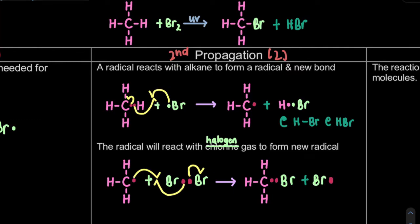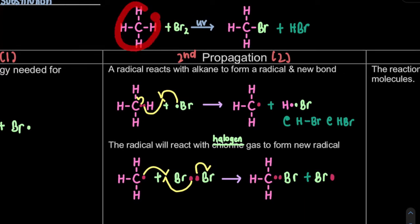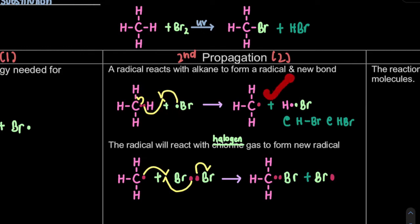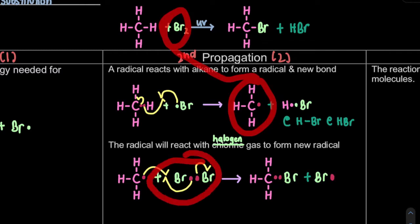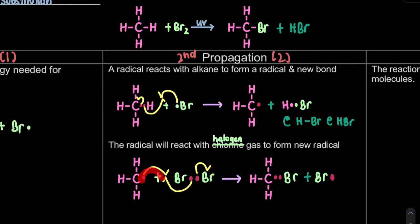The radical reacts with the stable compound. In propagation step one, the stable compound is our alkane. Remember when they couple, show where the arrows meet. Make sure the arrows meet each other. Then the one that couples must also show the one that clashes back. So we form the first radical, and then that radical couples again with another stable compound - our Br2.